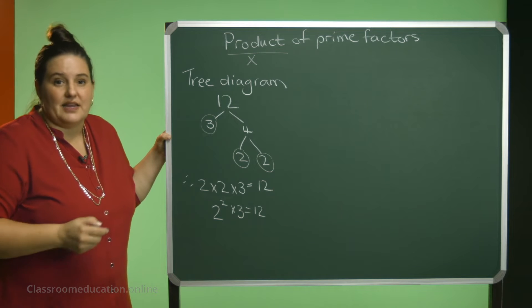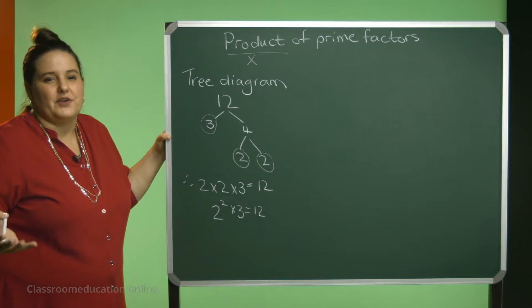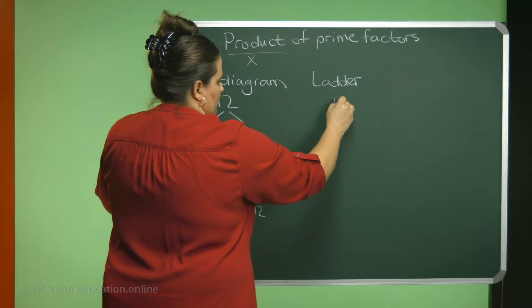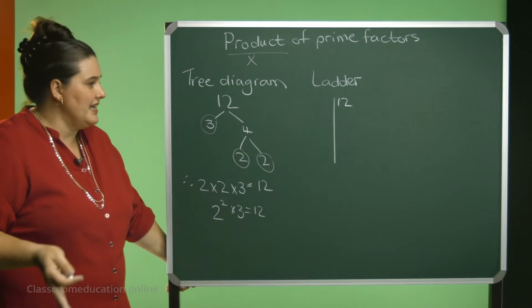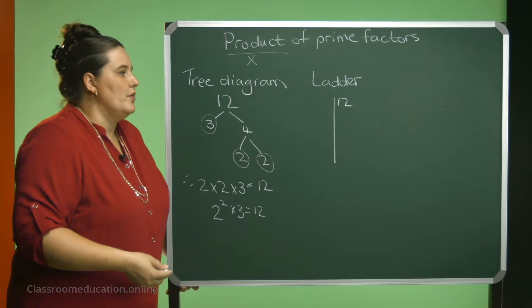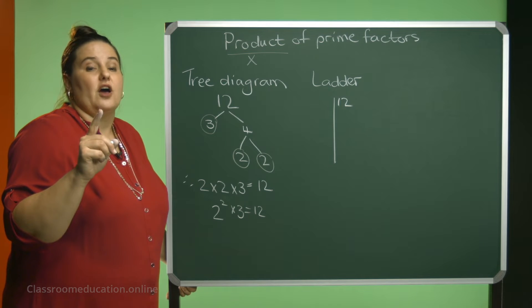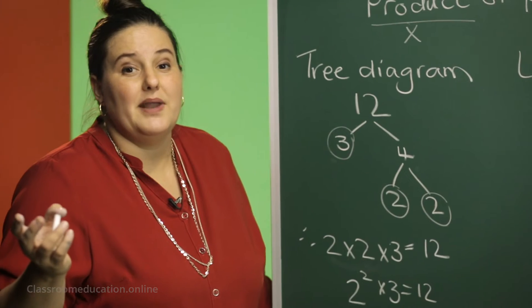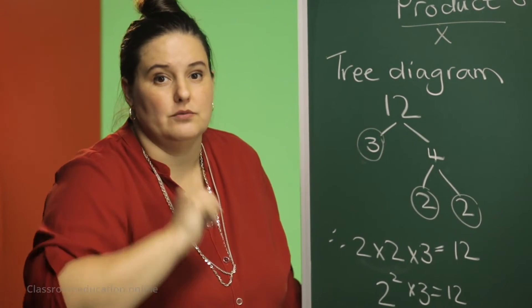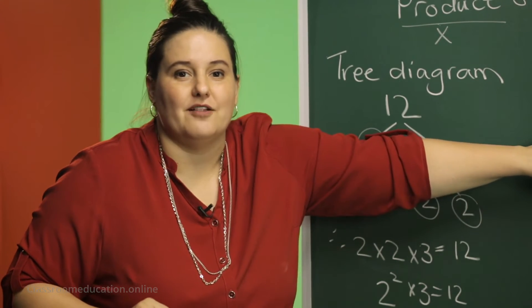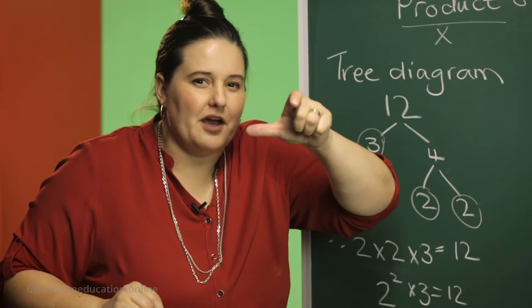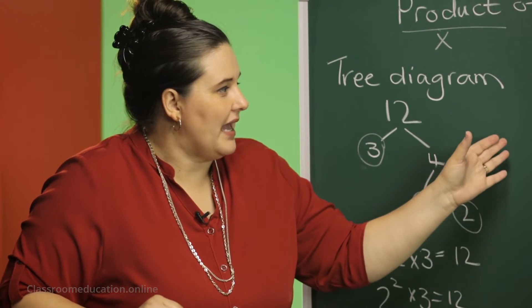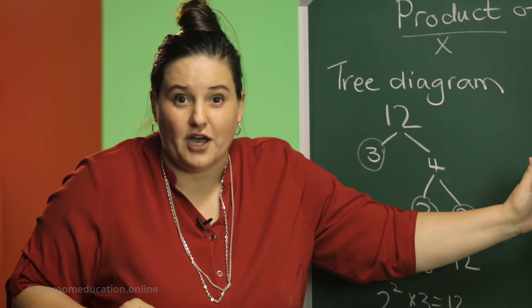The second method that I'm going to show you, we call the ladder method. We can draw a little line, and on the right-hand side, we will write the 12. Now, you start off by using your smallest prime number. Smallest prime number is 2. Can 2 go into 12?